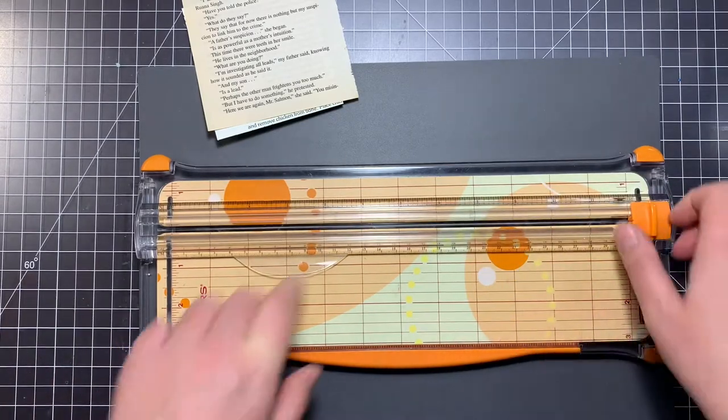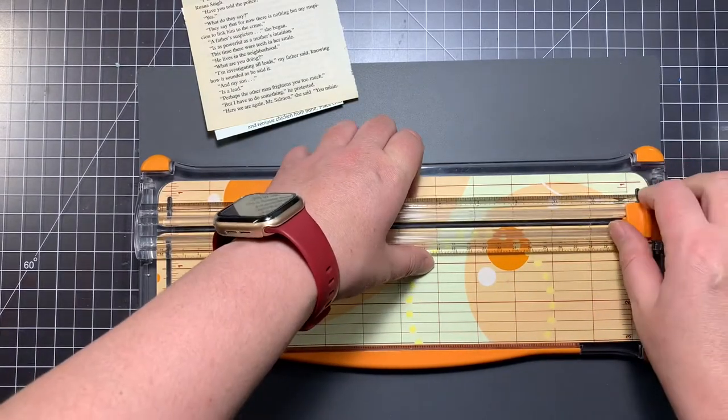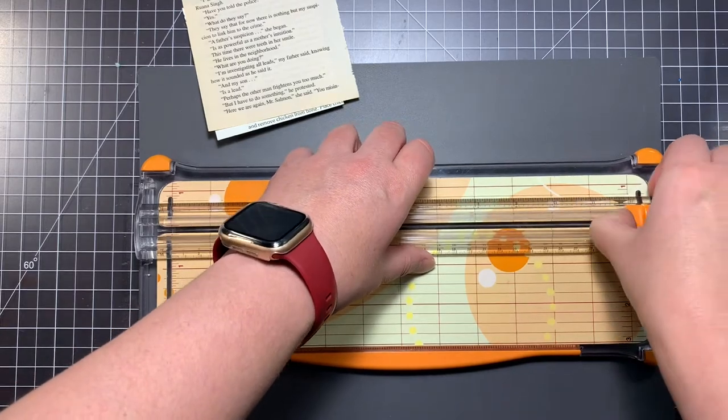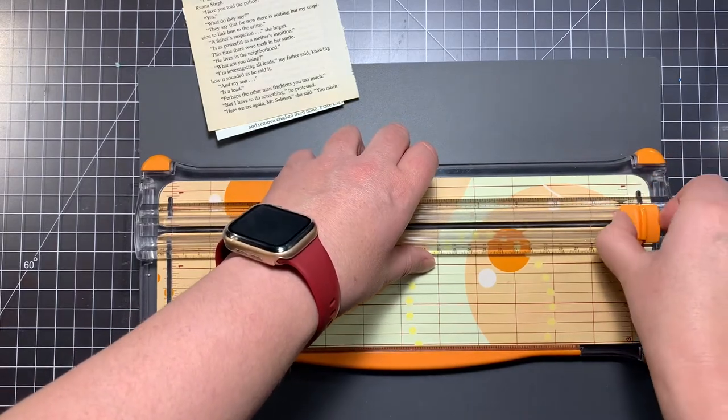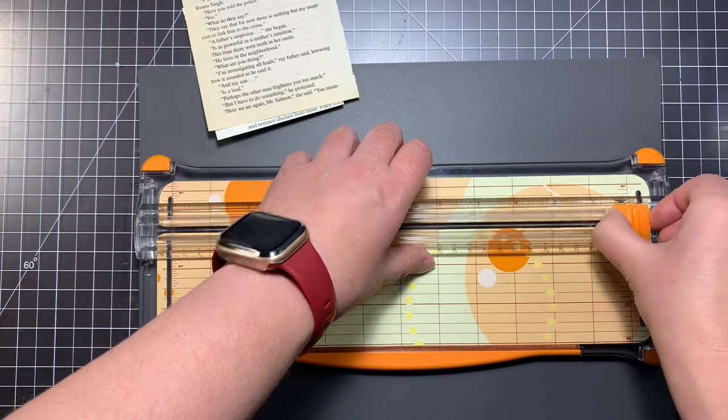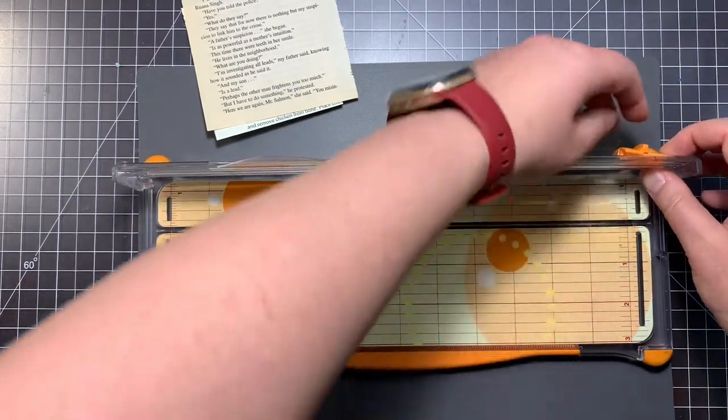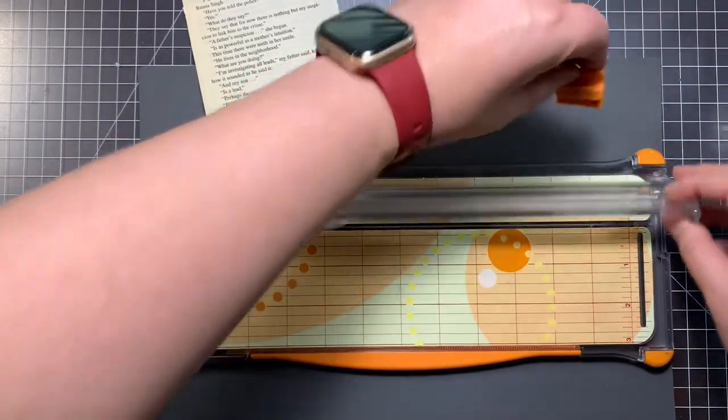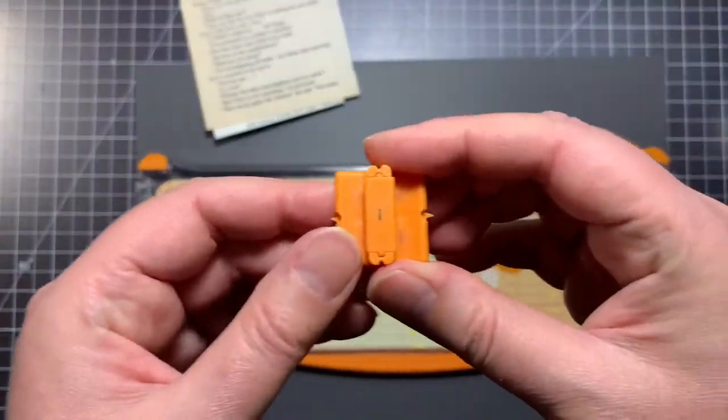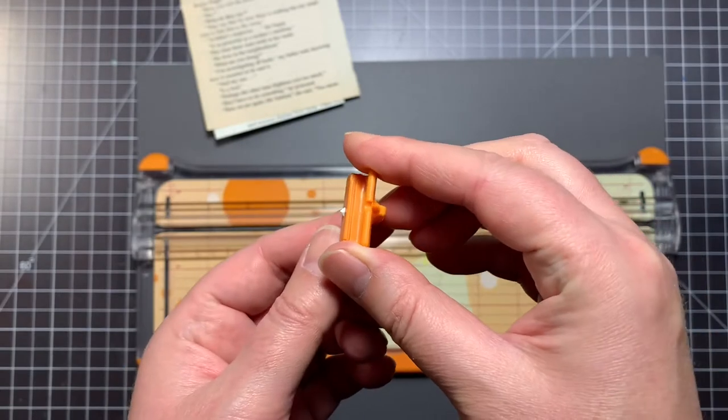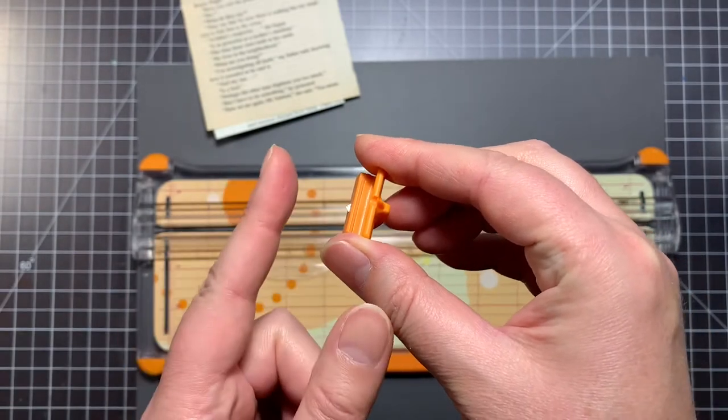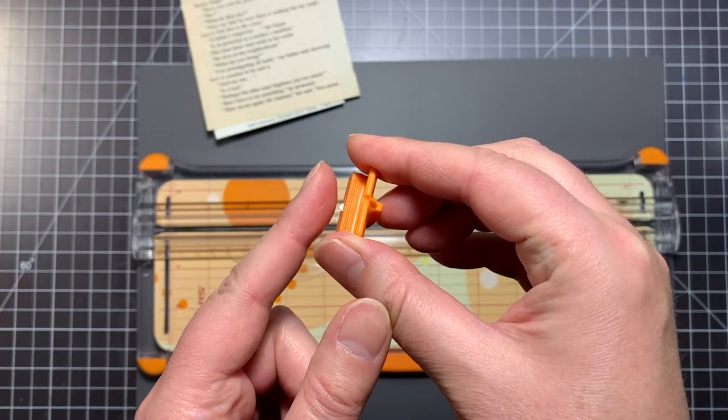The reason why I like this Fiskars one is because the blade is removable, very easy to remove. It usually just kind of pops up, there we go, and then you just slide it out. As you can see, the blade is right there. Probably shouldn't touch it, but there we go.